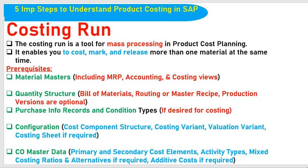The Costing Run comes under month-end and year-end activity and is very important in real time. The Costing Run is a tool for mass processing in Product Cost Planning. In order to do product cost planning, we need to run the Costing Run every month — this is a month-end activity. Mass processing means we can process the cost, and mark and release more than one material at the same time for a single company. CO users will perform this Costing Run activity every month end.